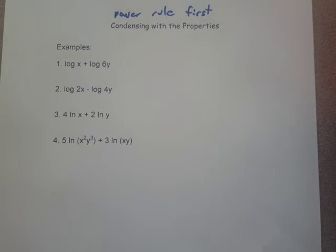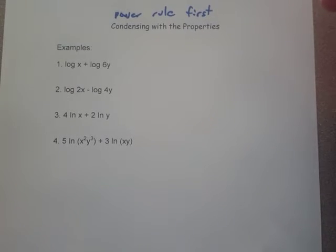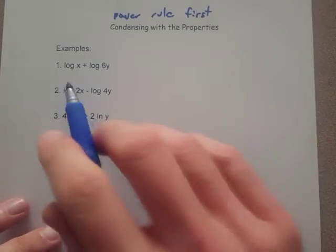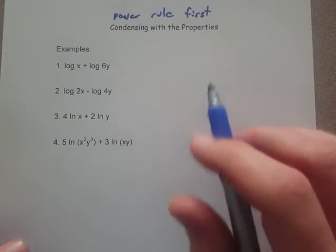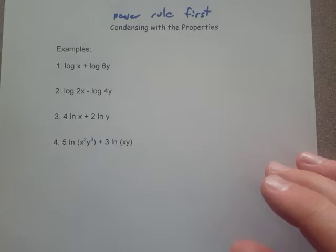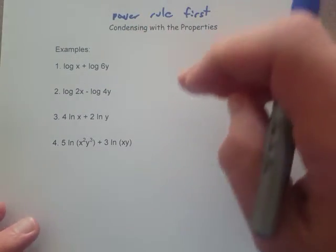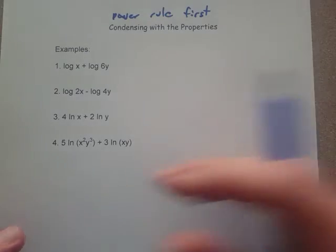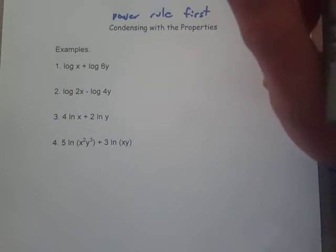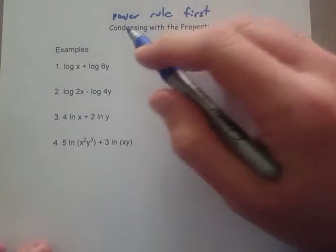And another thing I'll mention about condensing is that we're trying to get to a single log expression with this. One of the most common mistakes I see every year is that people will get to the end of a condensing problem and you'll see a bunch of logs all over the place. You might see log of 2x over log of 4y, and there's multiple logs in there, and that's not the point with condensing.